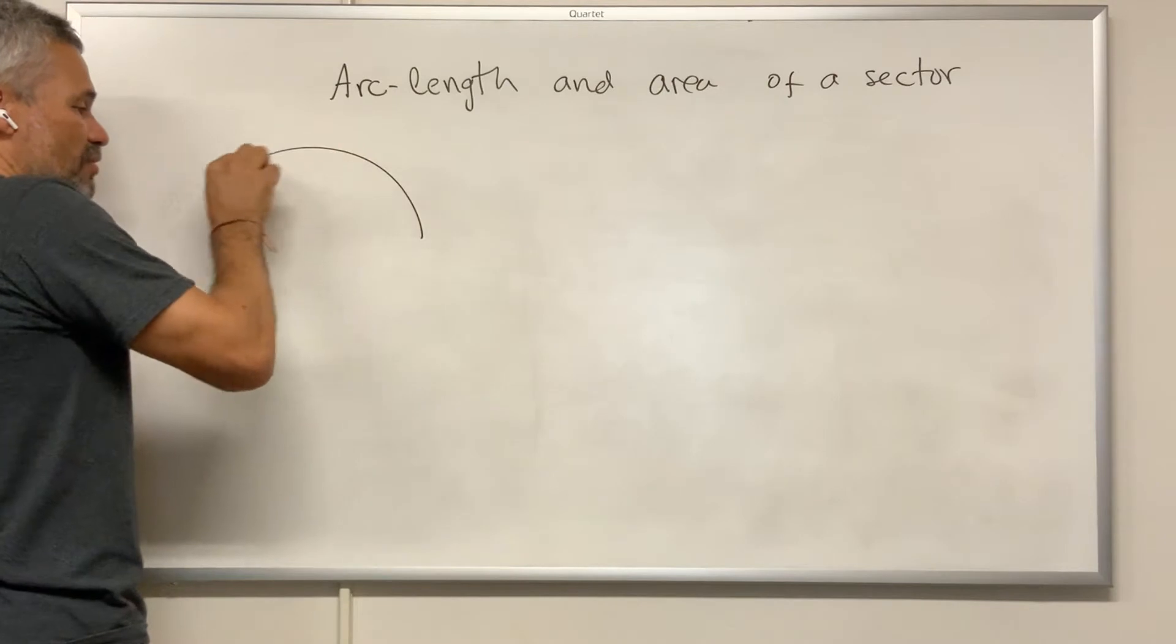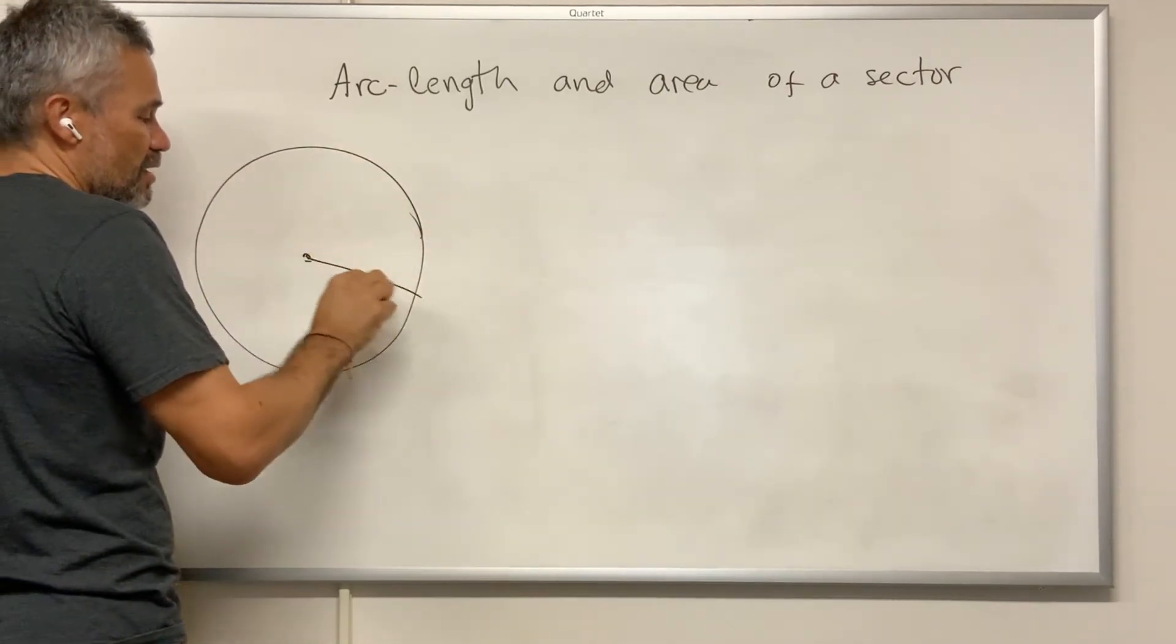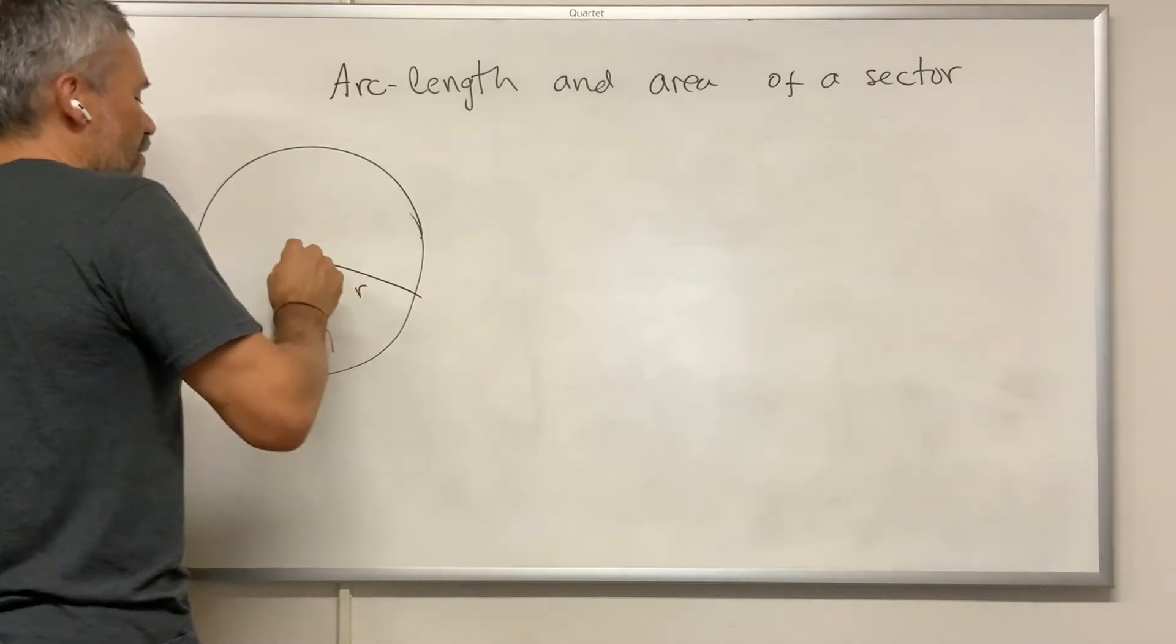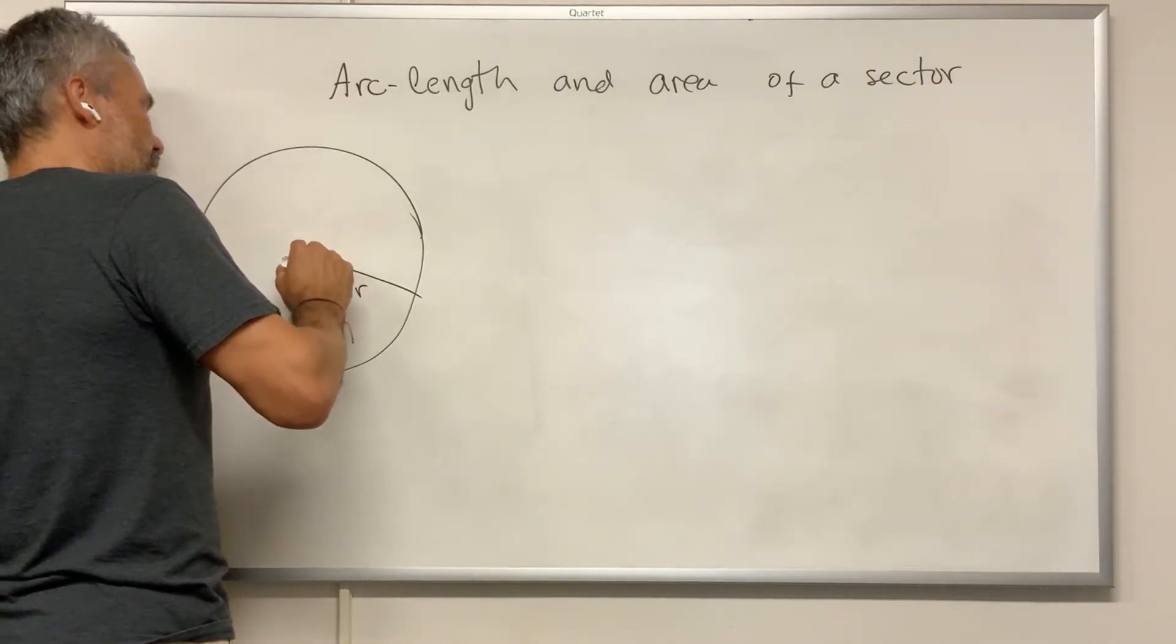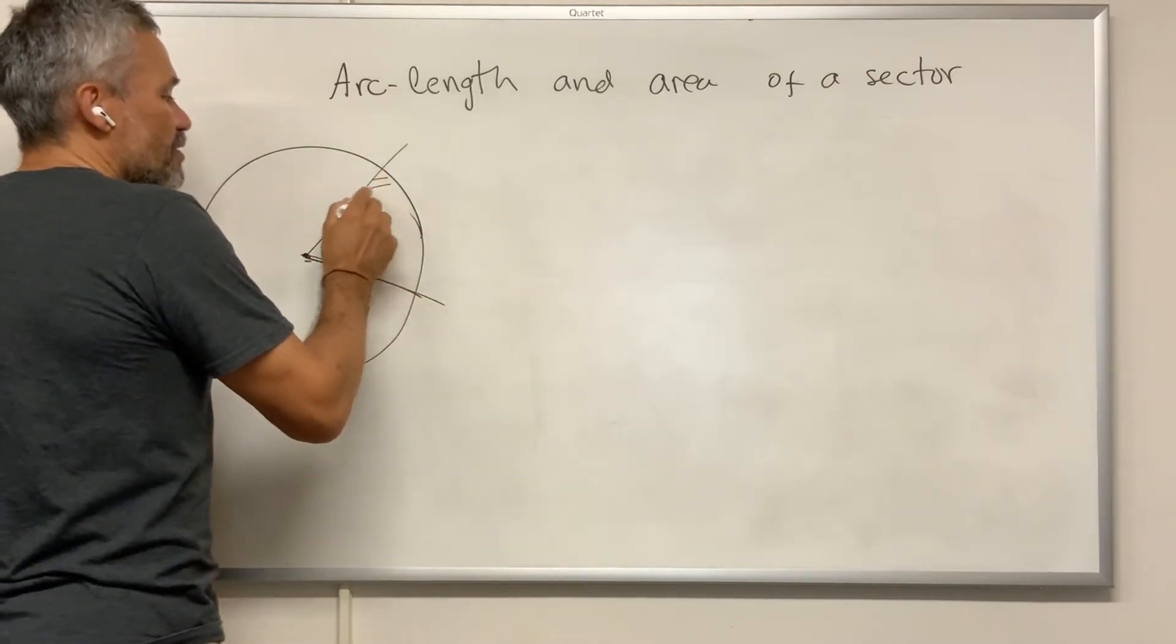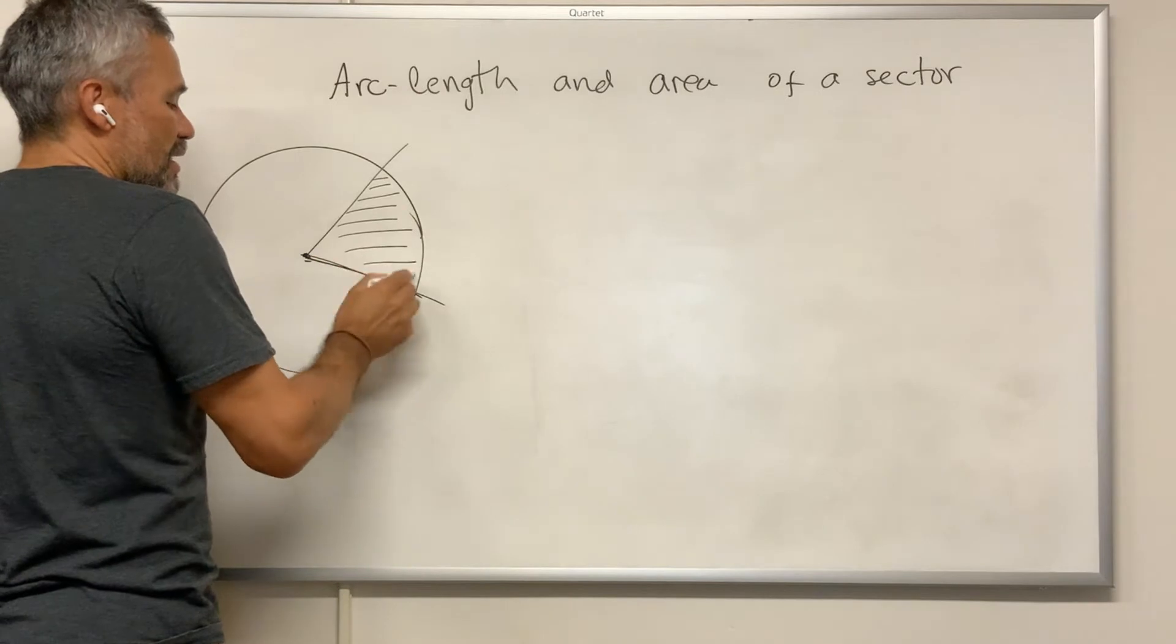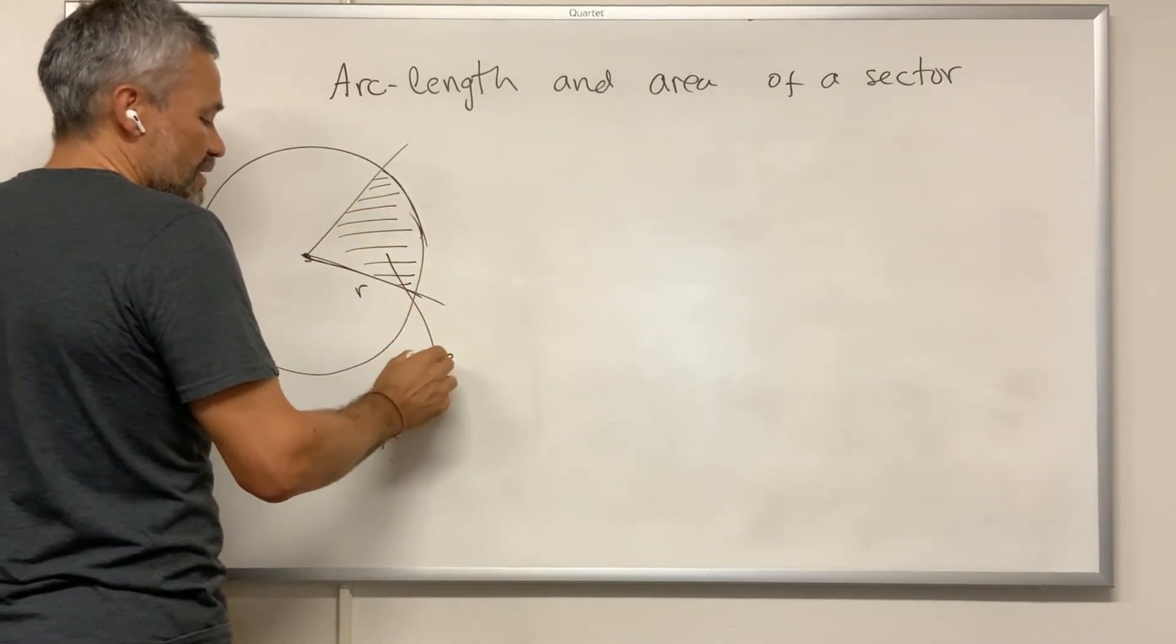Let's suppose that we have a circle of radius r, and that we have an angle with center at the center of the circle. Then this region enclosed by the angle and the circle is called a sector.